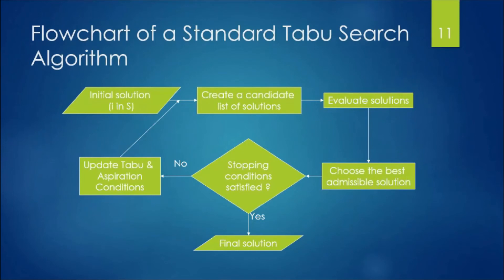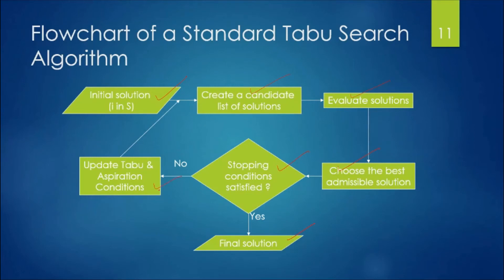The flowchart for the standard Tabu Search algorithm: first generate the initial solution; create a candidate list of neighborhood solutions; evaluate and choose the best admissible solution. Check whether the stopping condition is satisfied — if yes, go to the final solution; if not, update the Tabu List and aspiration conditions. While choosing the best admissible solution, we also check whether the solution is in the Tabu List.